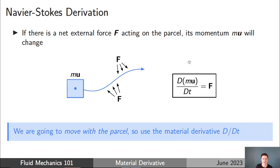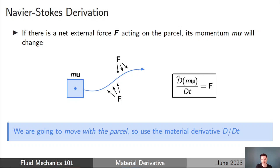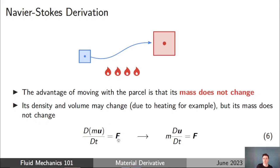Because we're moving with the parcel, we use the material derivative, capital D by capital DT. The advantage of this approach is that the mass of our parcel doesn't change. Even if the density changes as fluid thermally expands when heated, we're still considering the same group of fluid molecules — so mass is constant. That means we can take the mass outside of the Lagrangian derivative term, allowing us to arrive at equation 6, which is a very important equation.